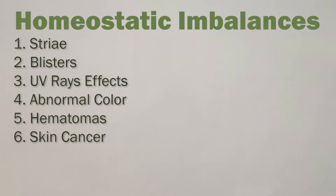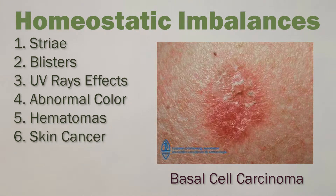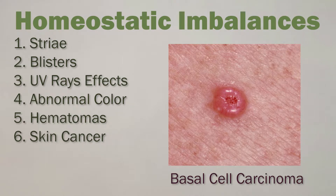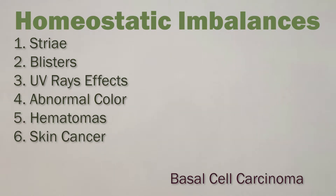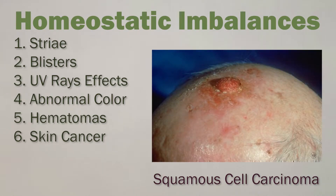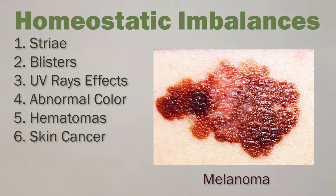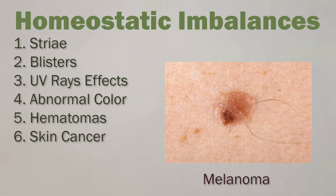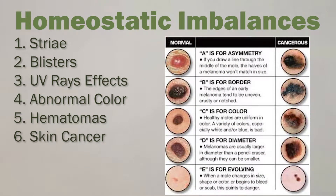Let's talk about skin cancer. There are three types. The most common and the least malignant is basal cell carcinoma, which starts in the very last layer of the skin, the stratum basale. Another type is squamous cell carcinoma, which begins in the stratum spinosum. And then the worst type is melanoma, which resists chemo and has a high rate of metastasizing. Remember to do skin checks — they're really important. Follow the A, B, C, D, sometimes E rule.